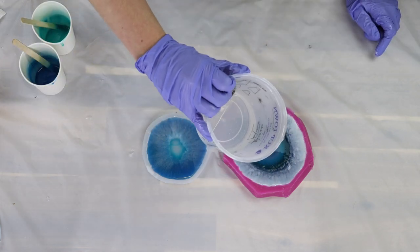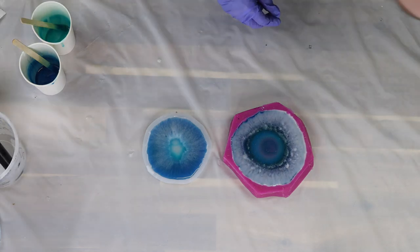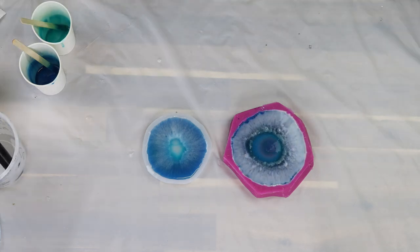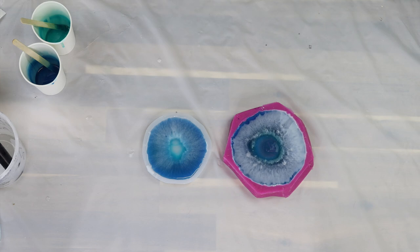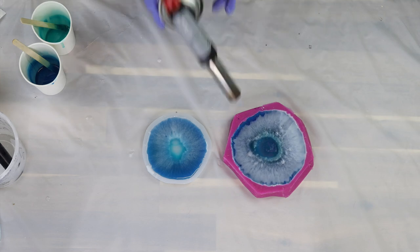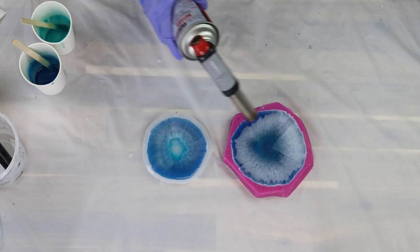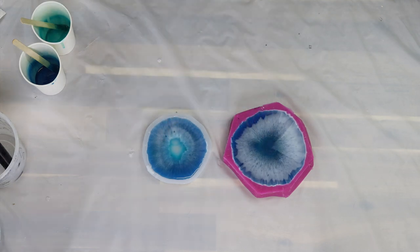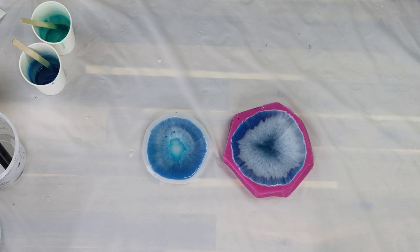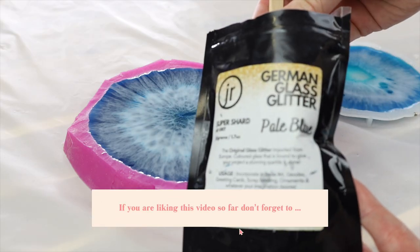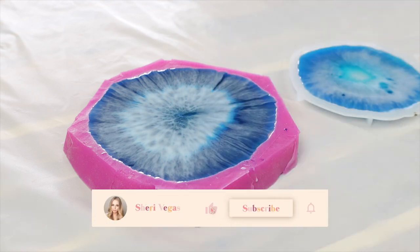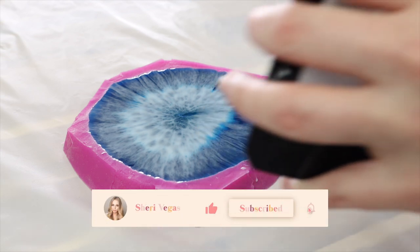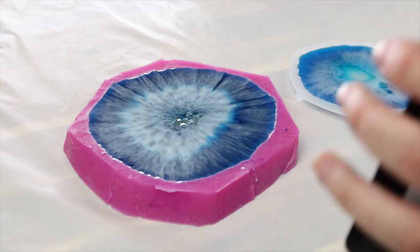And the only other thing that I did change for this pour is with my white I did two drops of the Casting Craft and two drops of a white alcohol ink. I feel like the alcohol ink because of the fact that it is an alcohol ink and will react differently in the resin is what really helps that white create cool patterns. Now I did get cool patterns using just the Casting Craft but I think it's just going to help it even more.